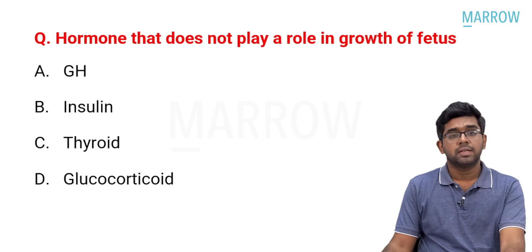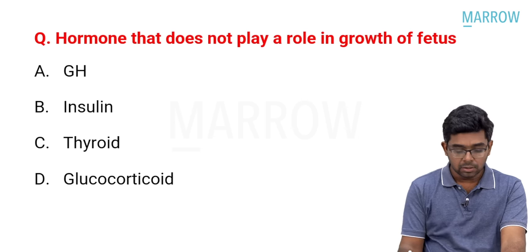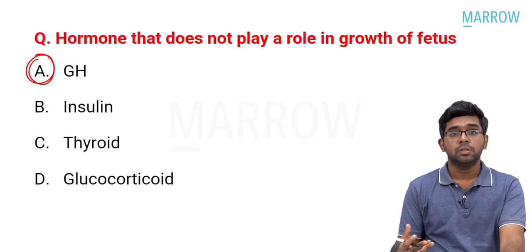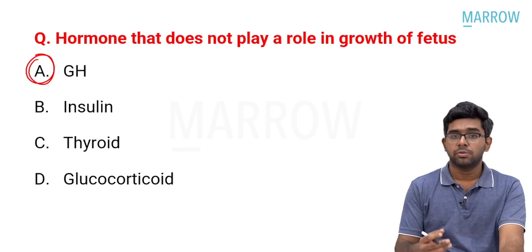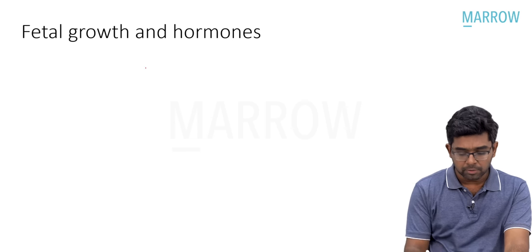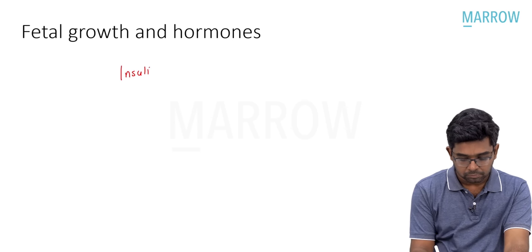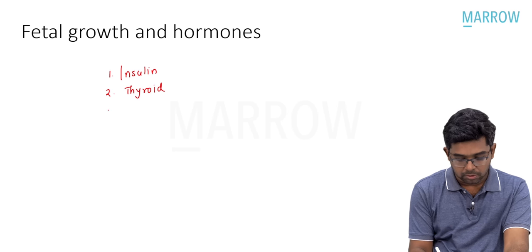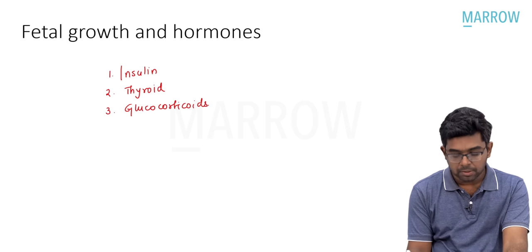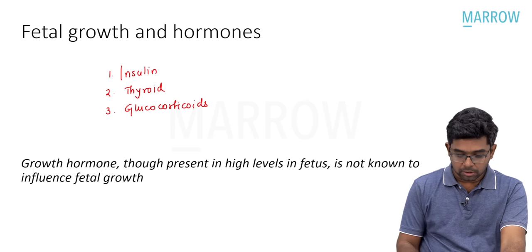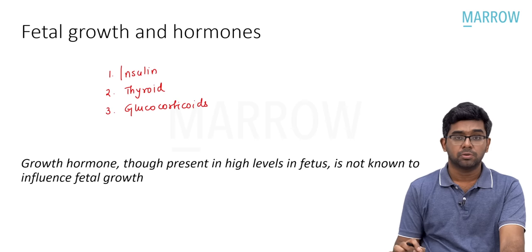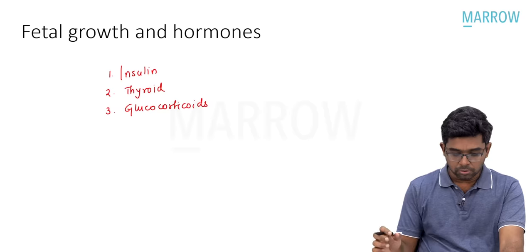Hormone that does not play a role in the growth of the fetus — growth hormone, insulin, thyroid, or glucocorticoid? The answer is growth hormone. Even though growth hormone is present in high levels in the fetus, it is not known to influence fetal growth. Growth hormone has a role only after birth. Important hormones for fetal growth are insulin, thyroid hormone, and glucocorticoids — the latter primarily towards the later part of gestation. This is directly stated in Opicaid textbook.